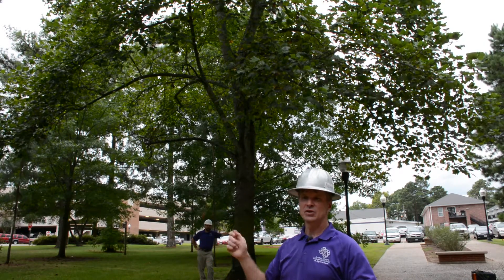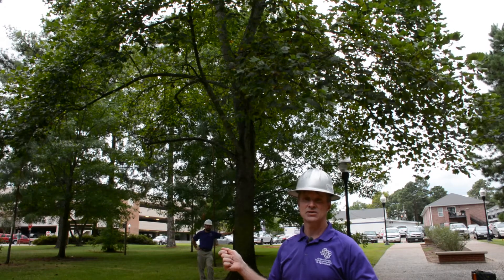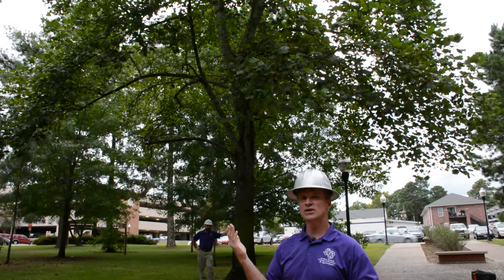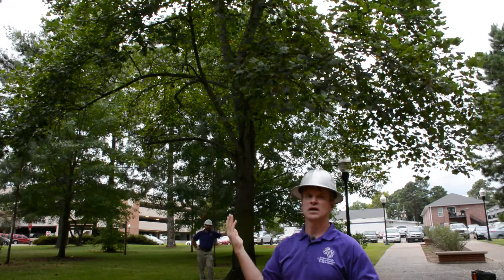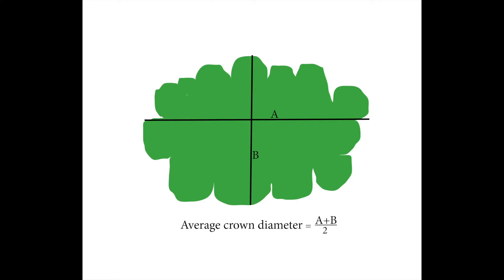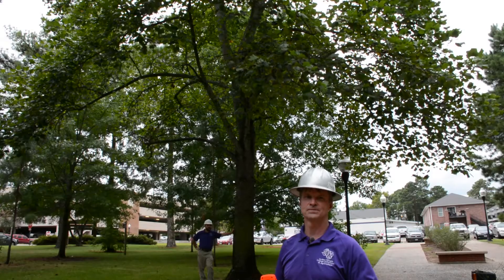Once we've determined that distance, we're going to turn 90 degrees from that and measure that distance. Then we will add those two distances together and divide by two to get the average crown diameter.